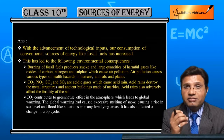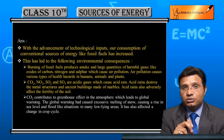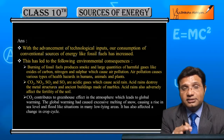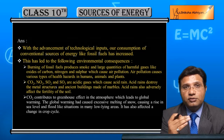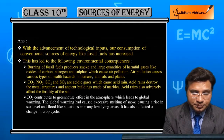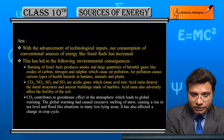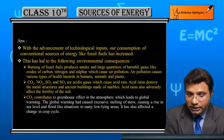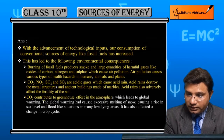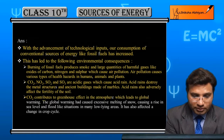Acid rain is caused by the acidic gases produced by the burning of fossil fuels. Additionally, CO2 contributes to the greenhouse effect in the atmosphere, which leads to global warming.